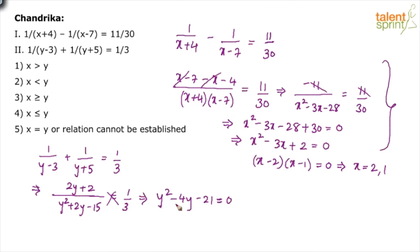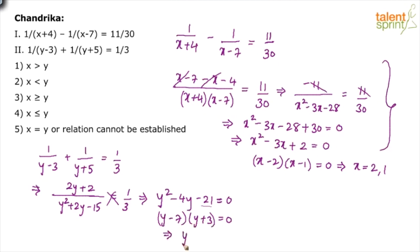The quadratic y squared minus 4y minus 21 equals 0 can be split as minus 7 plus 3, since minus 7 times 3 is minus 21 and minus 7 plus 3 is minus 4. So it factors as (y-7)(y+3) equals 0. Therefore y equals 7 or y equals minus 3.